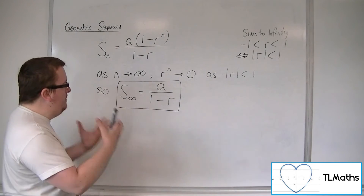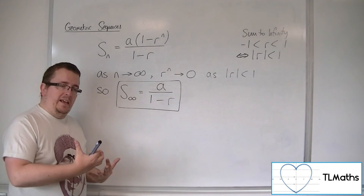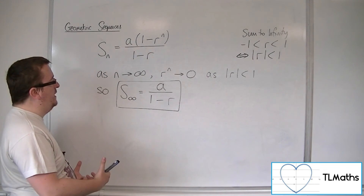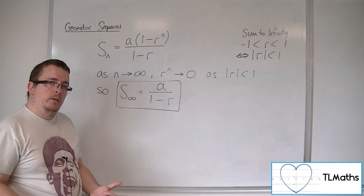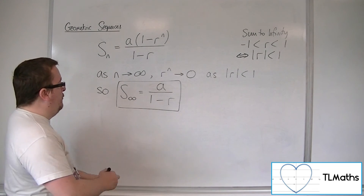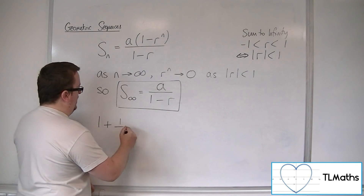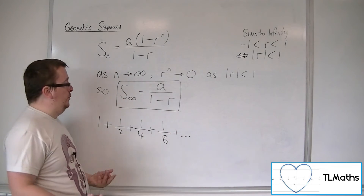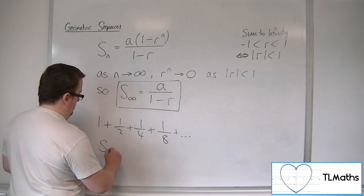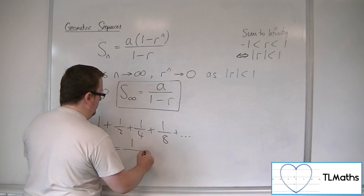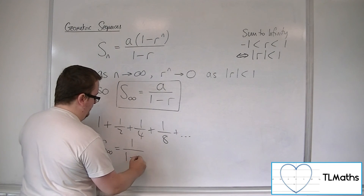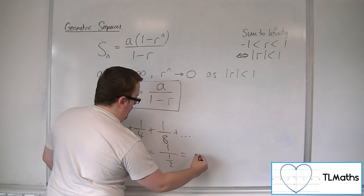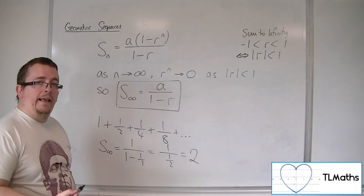It's a really simple formula for something so powerful — that we can add an infinite number of things together and get a finite value. For our previous example, 1 plus a half plus a quarter plus an eighth, we had it diagrammatically adding up to 2. This has a sum to infinity where the first term is 1 and the common ratio is a half. So 1 over (1 minus a half) — 1 divided by a half is 2, as we saw.